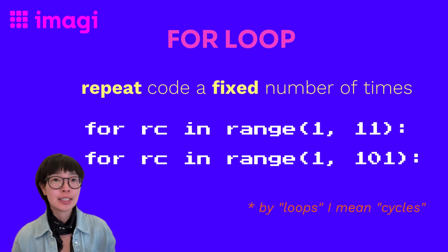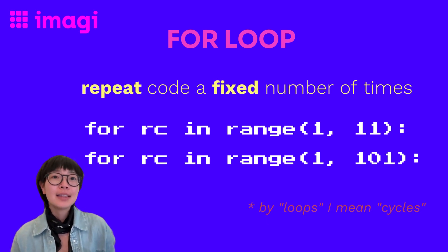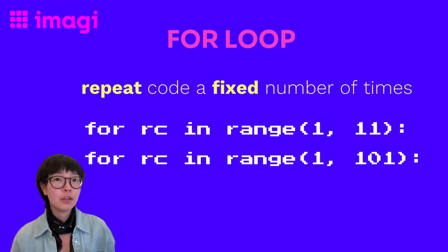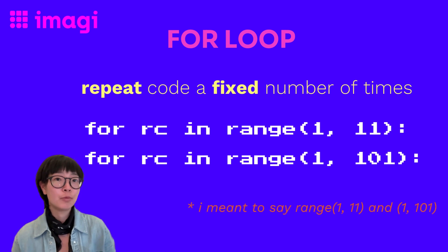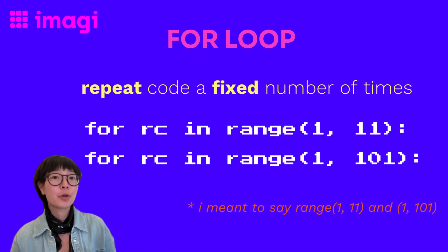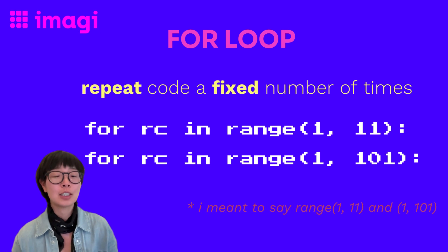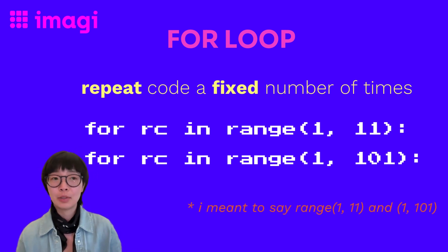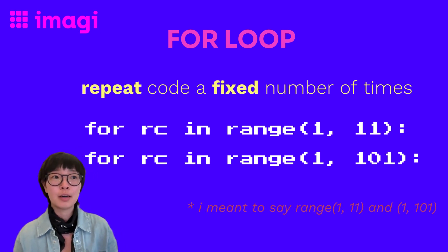That's where the range function steps in. It's like the sign at the start of the ride that says, hold on for 10 thrilling loops. In code, it looks something like this: for RC in range(0, 11), where RC stands for roller coaster. So if we go crazy and want to loop our ride a hundred times, we can do that easily by simply writing for RC in range(0, 101).